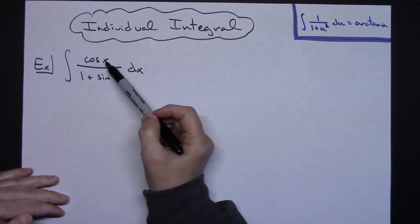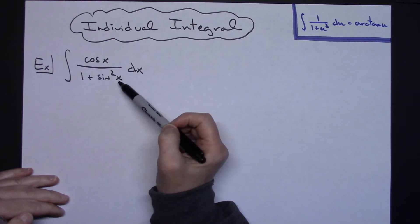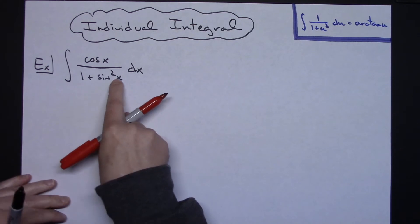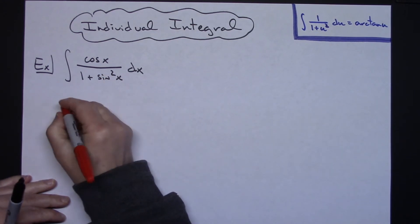We've got the integral of cosine x over 1 plus sine squared x dx. I'm going to do a basic u-substitution, letting that sine x be my u.